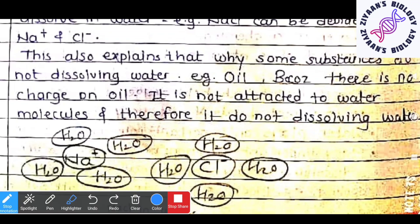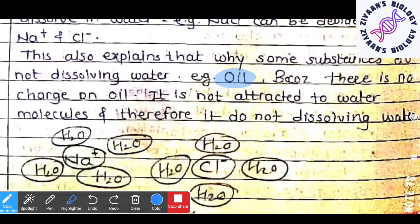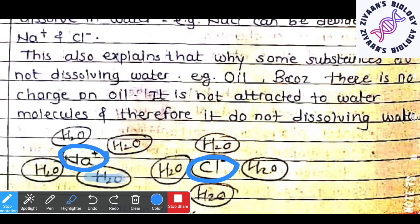This also explains why some substances do not dissolve in water — because they do not have any charge. For example, oil is hydrophobic because there is no charge on it, so it is not attracted to water molecules and therefore does not dissolve. In a diagrammatic representation, one sodium ion is surrounded by four water molecules, and similarly one chloride ion is also surrounded by four water molecules.